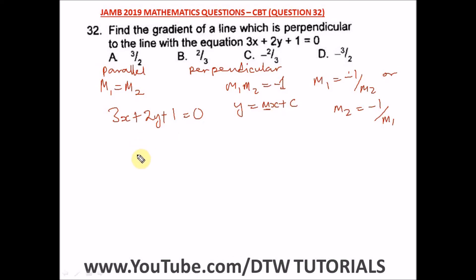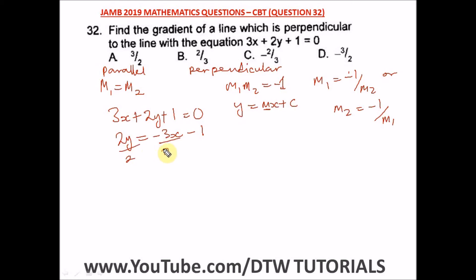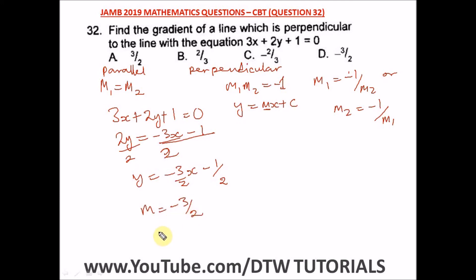We need to rearrange this equation into the form y equals mx plus c, where m is the gradient. Taking everything to the other side, we get 2y equals negative 3x minus 1. Dividing both sides by 2, we get y equals negative three over two times x minus one over two. So our gradient is negative three over two.